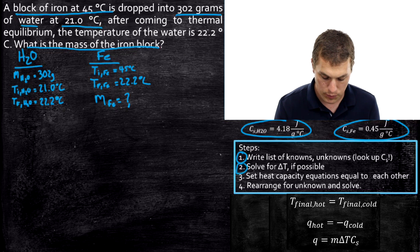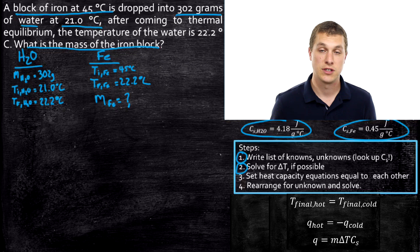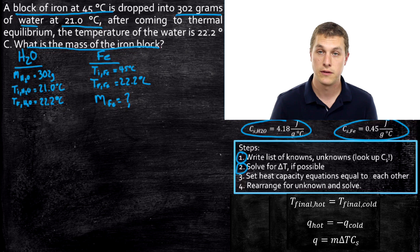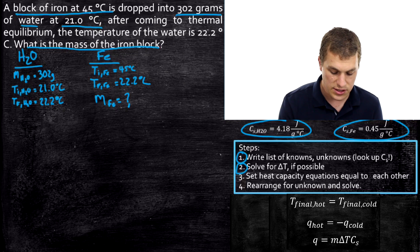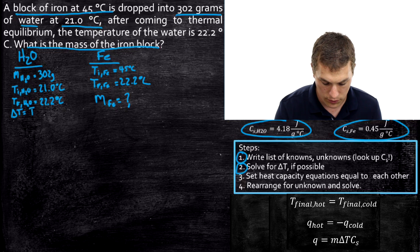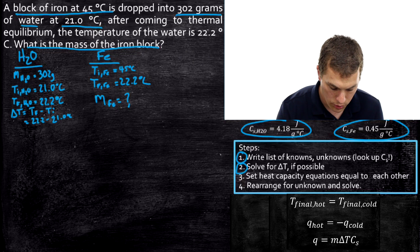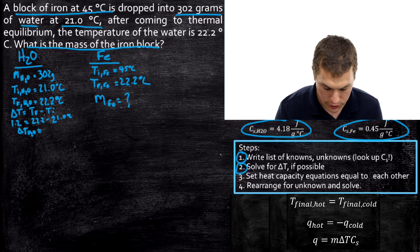Step two: solve for delta T if possible. In this case we have the initial and final temperature for both materials so we can calculate the change in temperature. Delta T equals temperature final minus temperature initial. For water, that's 22.2 degrees minus 21 degrees, which gives us delta T for water equals 1.2 degrees Celsius.